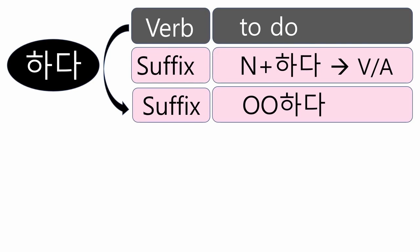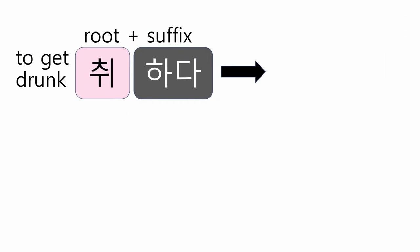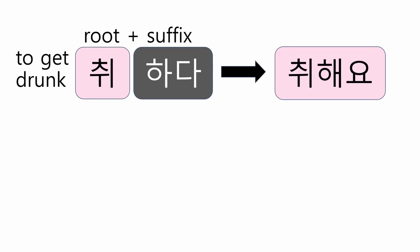At the beginning of this lesson, I said if you add 하다 to a noun it becomes a verb or an adjective. However, 하다 is not always attached to nouns. Take a look at 취하다, which means 'to get drunk.' In this case, 취 and 하다 are not separated because 취 is not a noun — it's just a verb in itself. The final form is 취해요.